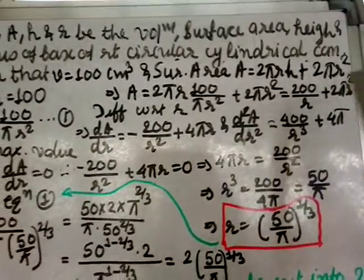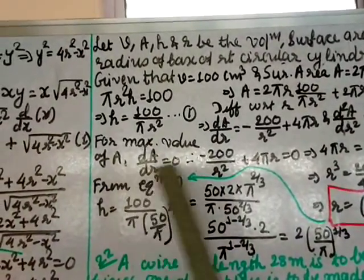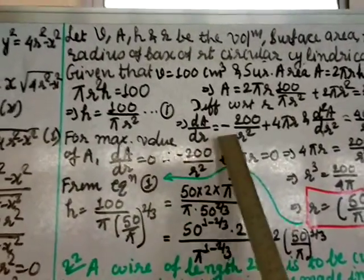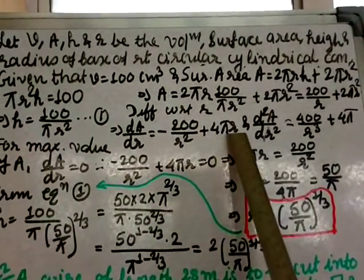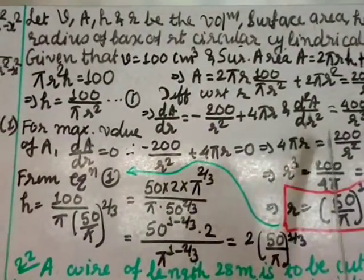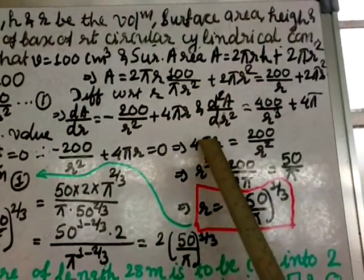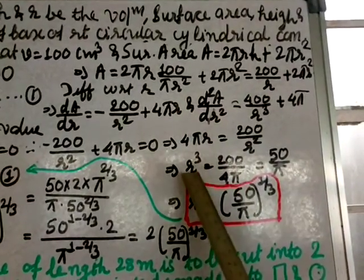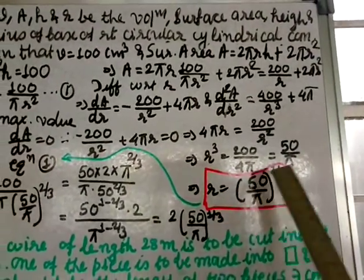For minimum surface area, set dA/dr = 0: minus 200/r squared + 4πr = 0. Rearranging: 4πr = 200/r squared, so 4πr cubed = 200, giving r cubed = 50/π. Taking the cube root: r = (50/π) to the power 1/3.